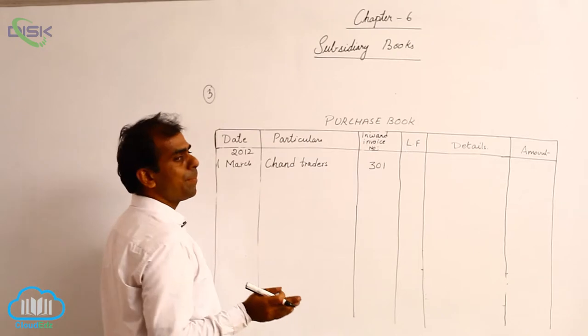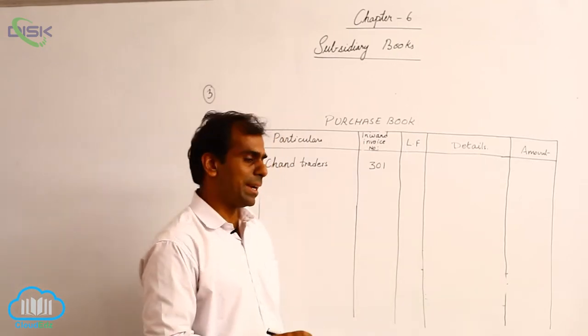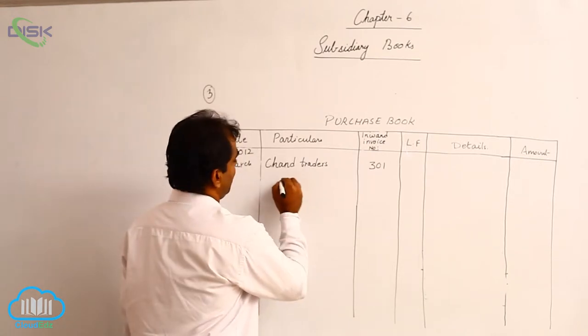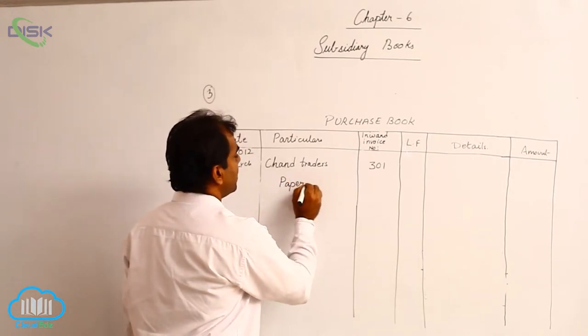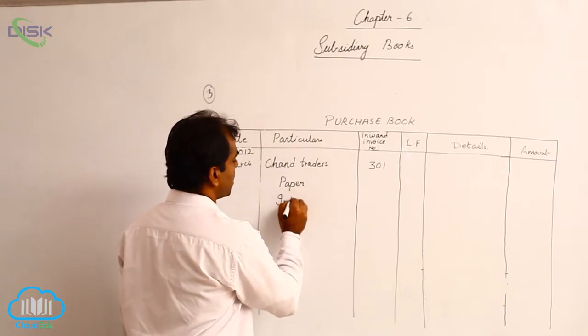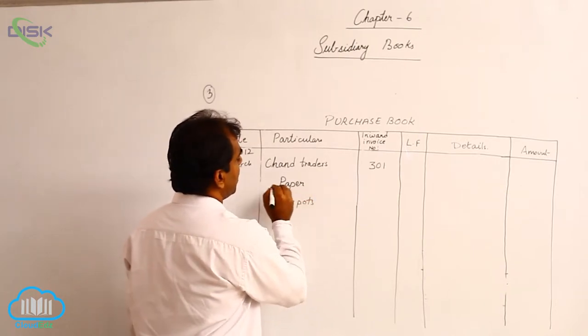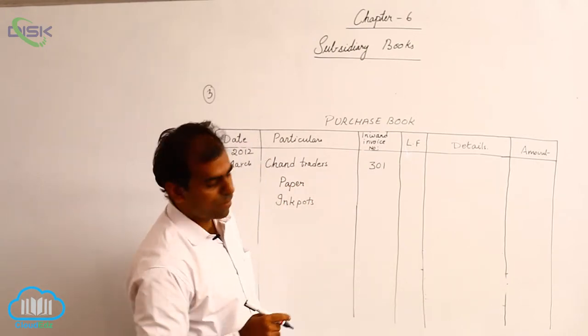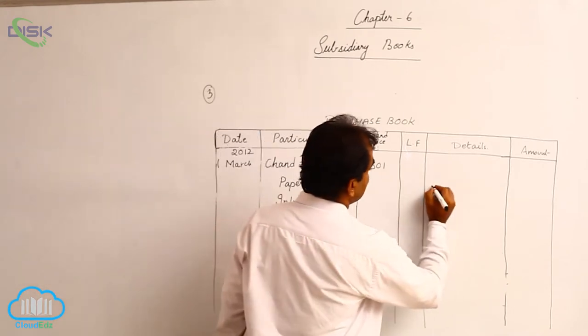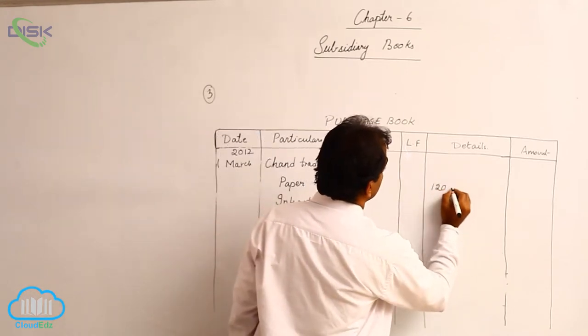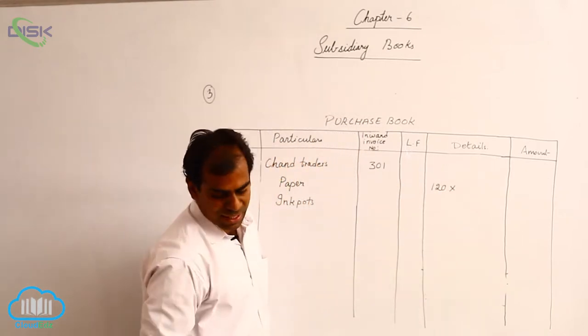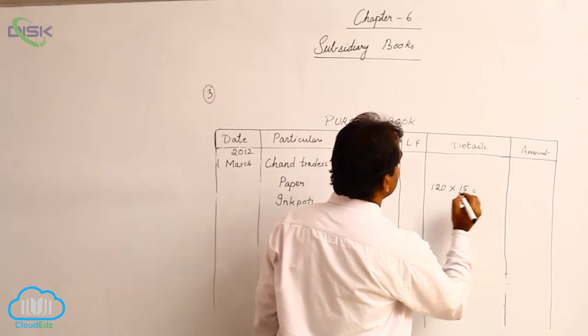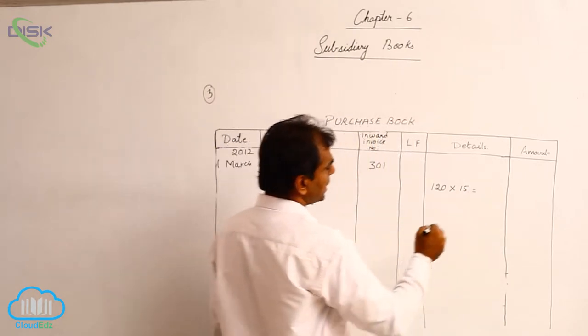Now here we are purchasing two different items on credit. One is paper, and the second is ink pots. So we are buying how many reams of paper? 120. So 120 reams at the rate of 15 per ream, which would come to 1800.